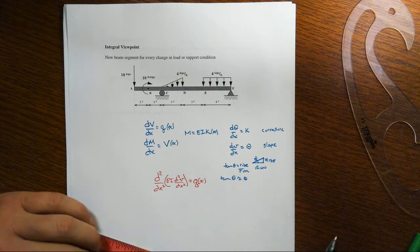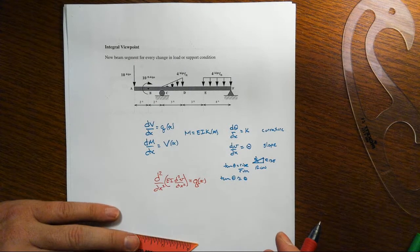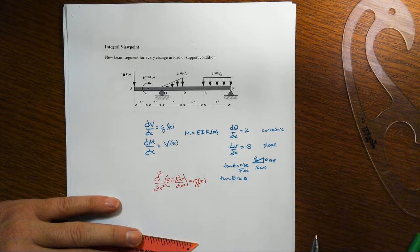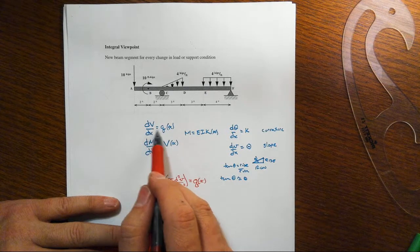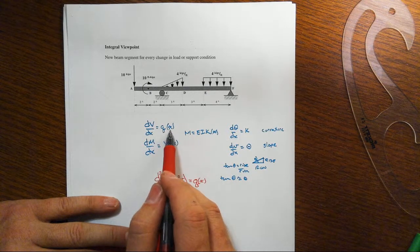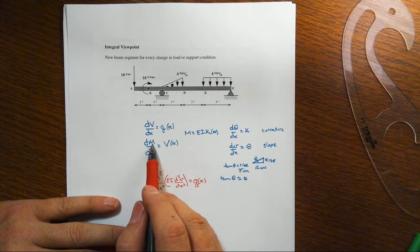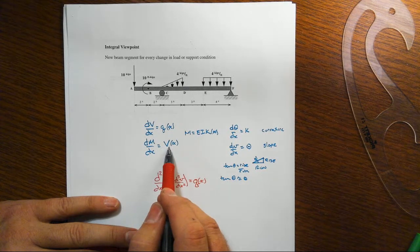An important part of understanding our models for beam deflections is how we handle all this differential equation. Remember from beam statics, the rate of change of the shear is equal to the distributed load intensity, and that the rate of change of the moment is equal to the shear.